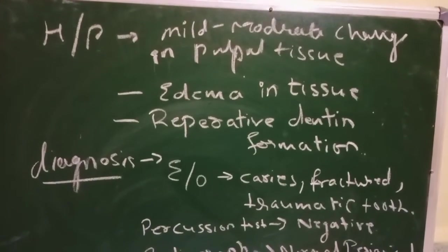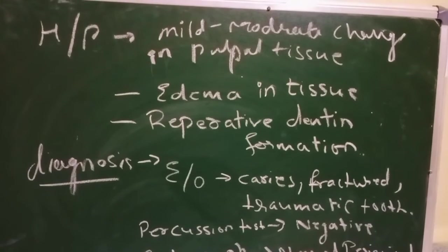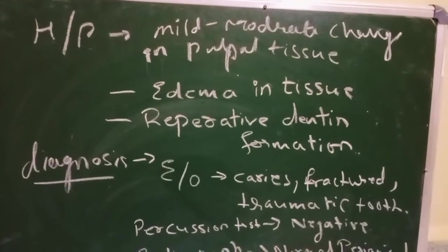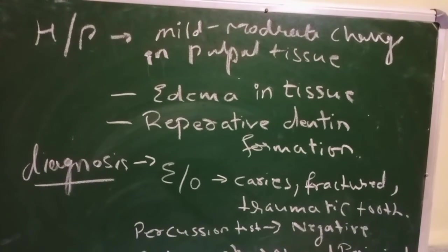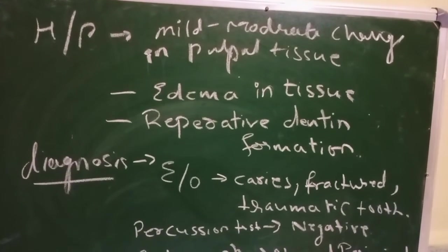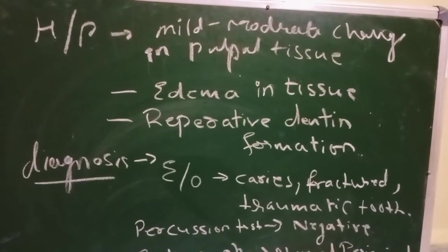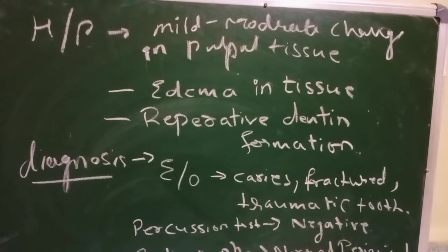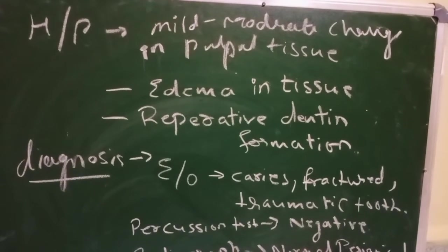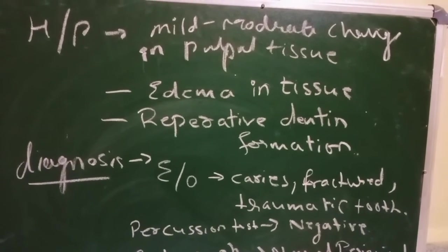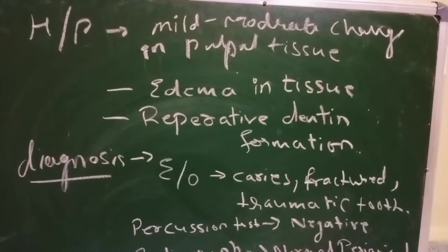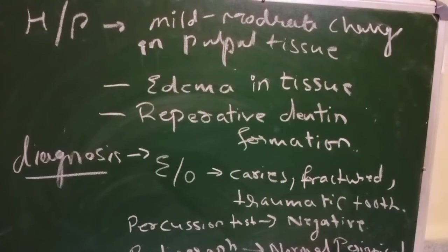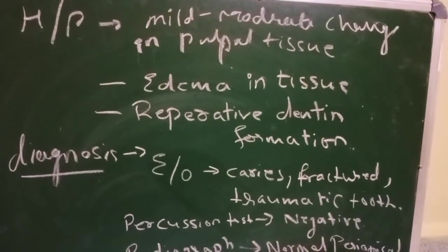In the histopathology of Pulpitis, we can see mild to moderate changes in the pulpal tissue, edema in the tissue, and reparative dentin formation over the pulp.